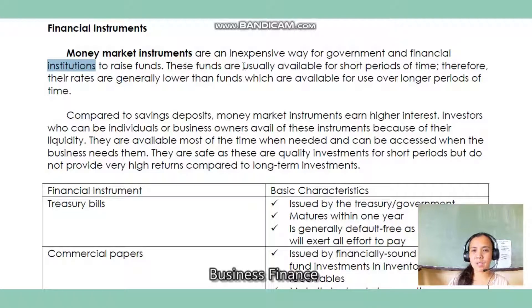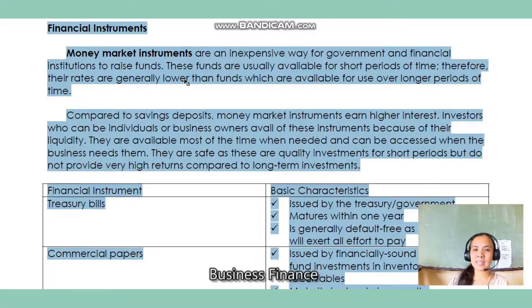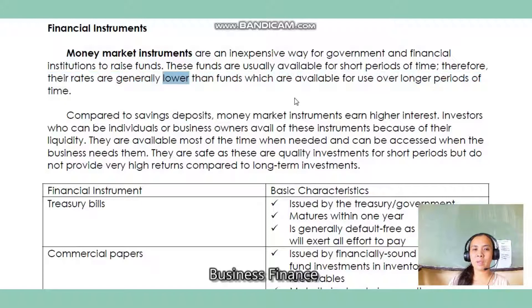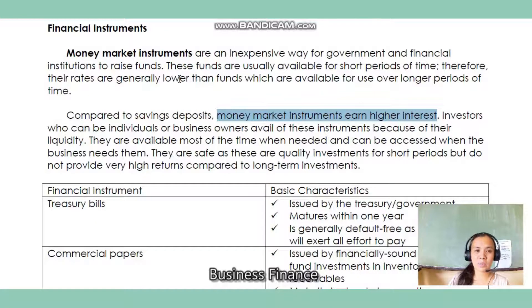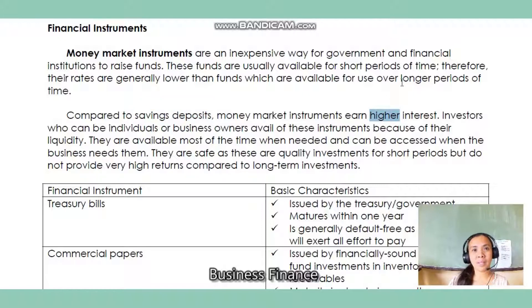These funds are usually available for short periods of time, therefore their rates are generally lower than funds available for use over longer periods of time. So you earn less from money market instruments compared to long-term financial instruments. However, compared to savings deposits, money market instruments earn higher interest. So compared to savings deposits it's higher, but compared to long-term financial instruments it's lower.